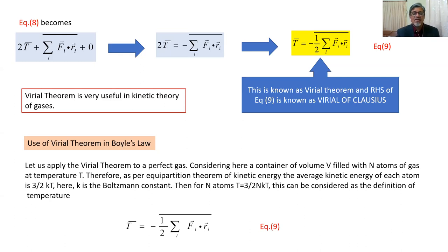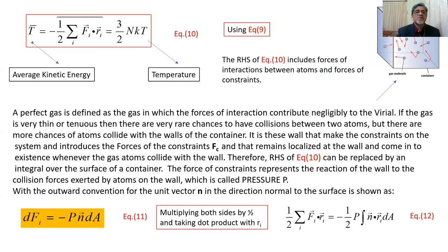By definition from equation nine, the time average of kinetic energy equals one-half times the time average of summation Fi dot Ri. This time average can be equated to the average kinetic energy from the equipartition theorem: average kinetic energy equals one-half summation Fi dot Ri, time-averaged, which equals three-halves NkT.